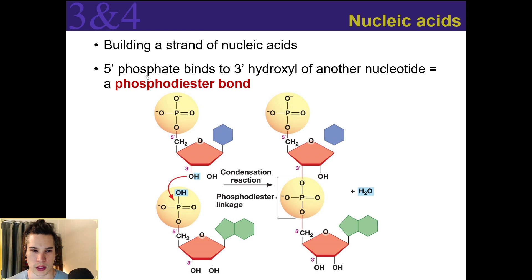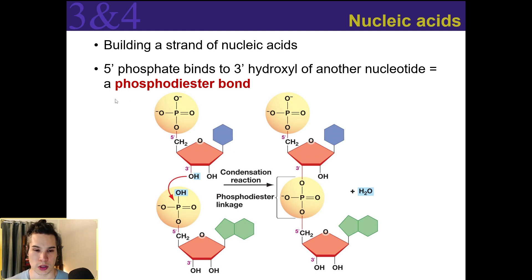The way I like to remember this is you can just look at "phospho" and associate that with the phosphate group. Out of all of the linkages between the monomers of our macromolecules, this is going to be the only one that contains a phosphate group. So a phosphodiester bond links the two nucleotides.